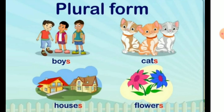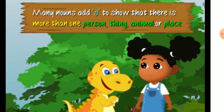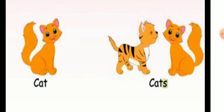We usually add 's' to the naming word to make it mean more than one. A singular noun changes into plural nouns in many ways. So let's see some rules to change a singular noun into a plural noun. Many nouns add 's' to show that there is more than one person, thing, animal, or place — such as 'cat', where we add 's' to make it 'cats' in plural form.